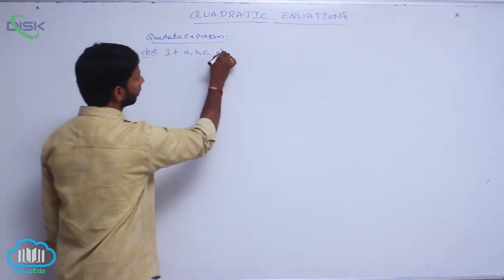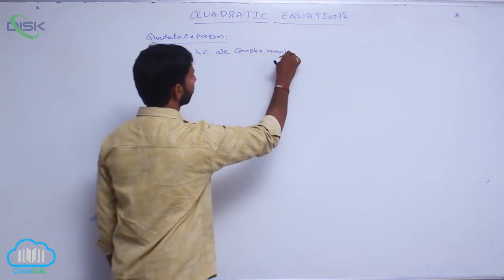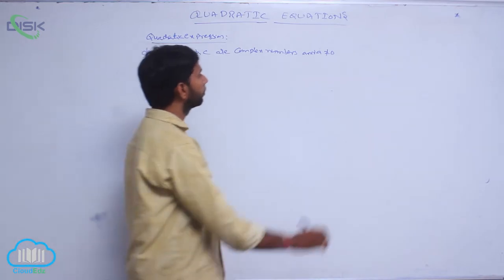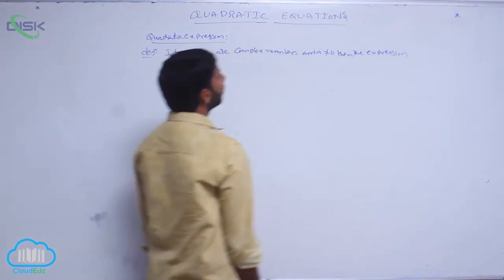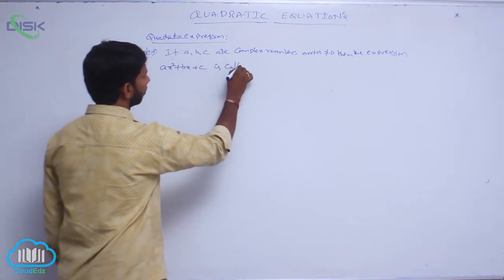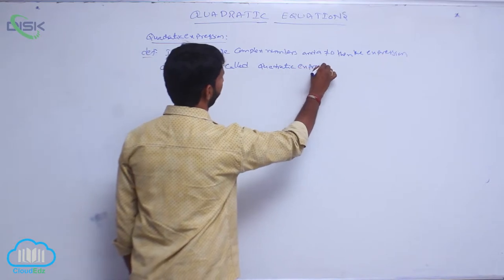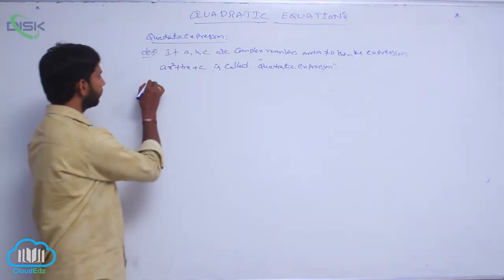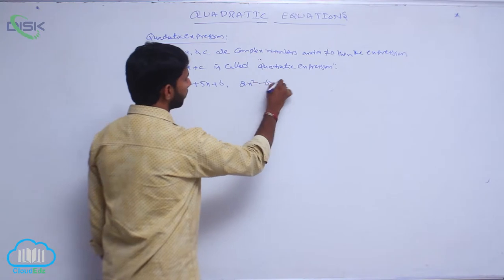If a, b, c are complex numbers and a is not equal to 0, then the expression ax² + bx + c is called a Quadratic Expression. Examples are x² + 5x + 6 and 2x² - 6x + 8.